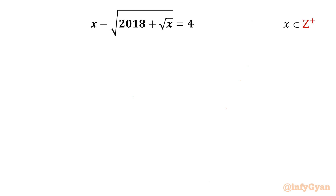Welcome back to Infigyan friends. Today in this video we are going to take up one very interesting radical challenge for the value of positive integers. The equation is x minus square root of (2018 plus square root x) equals 4, where x belongs to positive integers. Let's get started by providing our substitution.